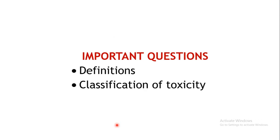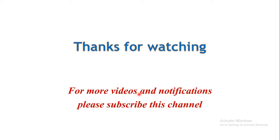These are the different ways by which toxicity can be classified. The important questions pertaining to this topic include definitions: toxicity, toxicant, hazard, and risk. Classification of toxicity may also be asked — we have seen four types of classifications. A note may be asked on any of these. Thank you.